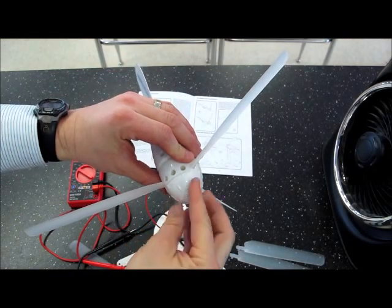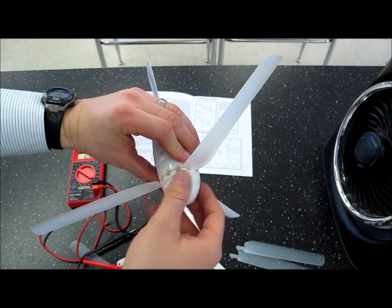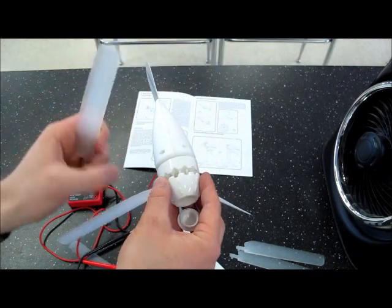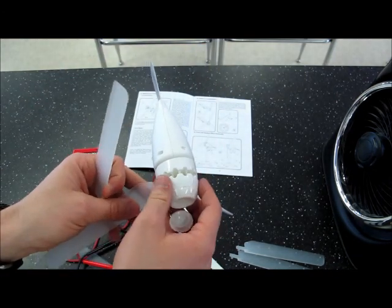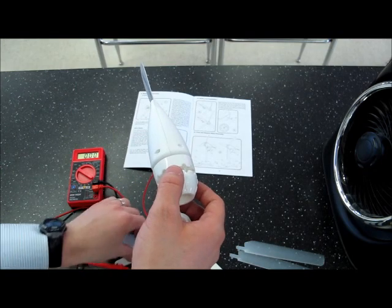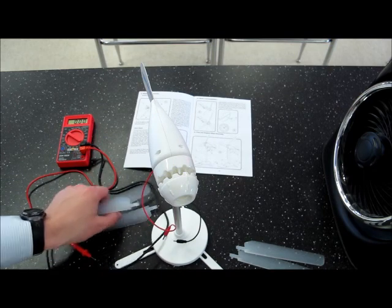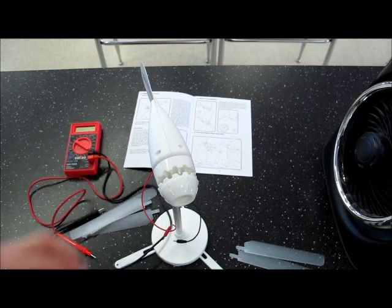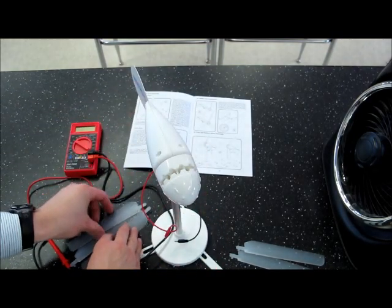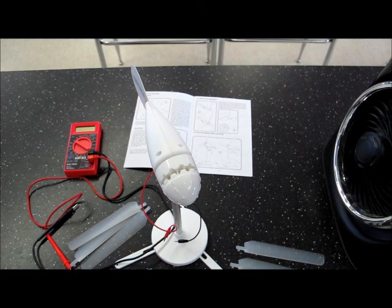When you're all finished at the station, twist this off counter-clockwise to remove the blades you put in place so the next group can see everything how you found it, with the three groupings of three. Remember to turn off your voltmeter as well. The station should look the same when you finish as when you arrived.